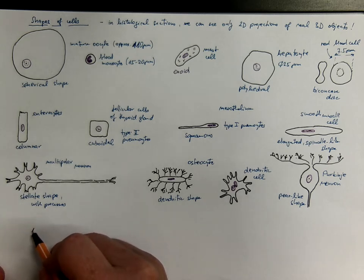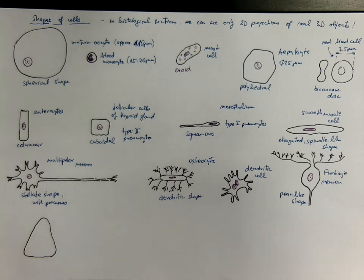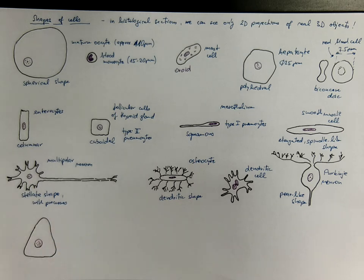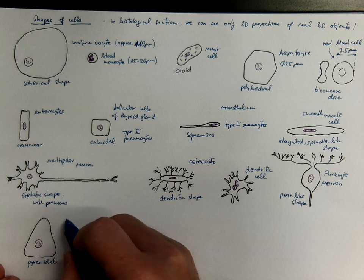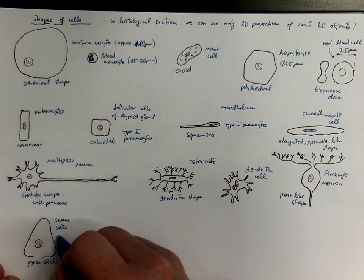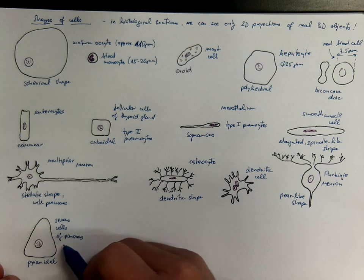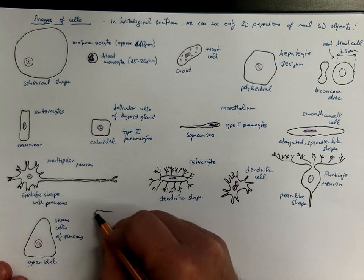Another shape would be the one that resembles a pyramid. It looks more or less like a triangle in the intersection. So we call it pyramidal. And that's how the cerebellum cells, which are actually glands of the pancreas, look like. I mean the exocrine portion of pancreas, or serous cells of the parotid gland. Also neurons could have this pyramidal shape.